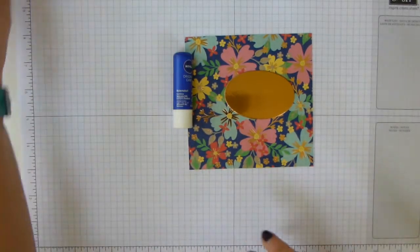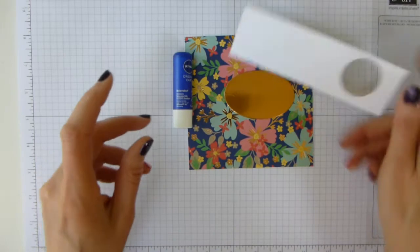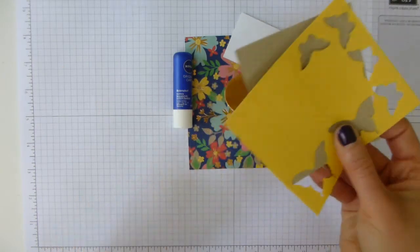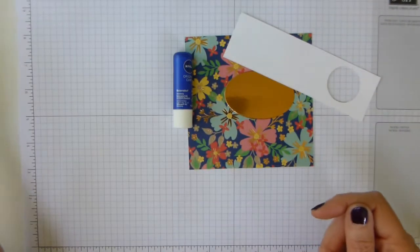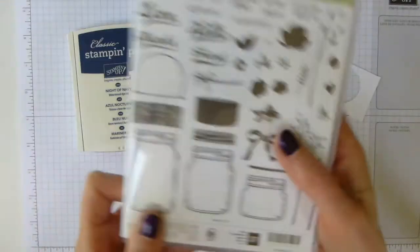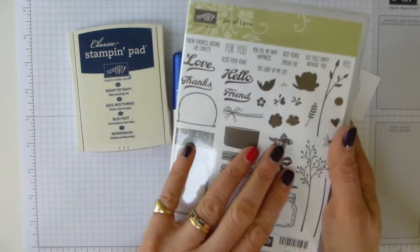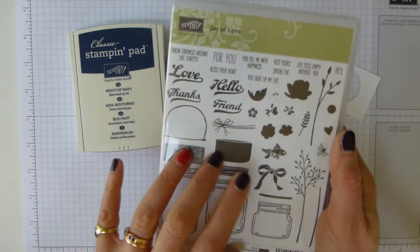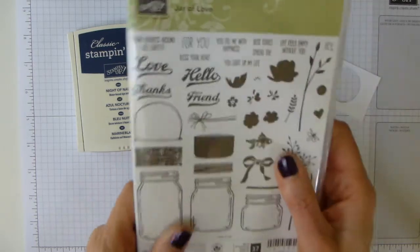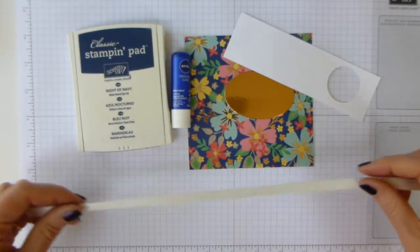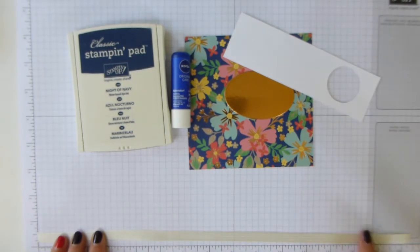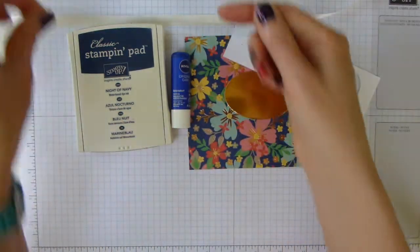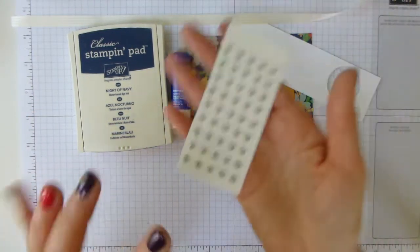Some Whisper White just for the stamping, and it is just a scrap, and then a scrap of Crumb Cake, and a scrap of Daffodil Delight for the Blossom Bunch, some Night of Navy ink, and then I'm using the Thanks from the Jar of Love set, and this is carrying over. But if you want the bundle, you need to get it before the 31st of May, because the bundle price will go on 1st of June. And then the Very Vanilla Ribbon, and this is about 15 inches, and I'll use some Night of Navy Baker's Twine, and some Rhinestones.